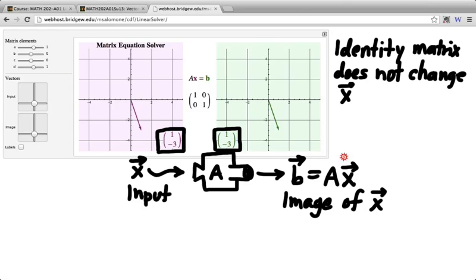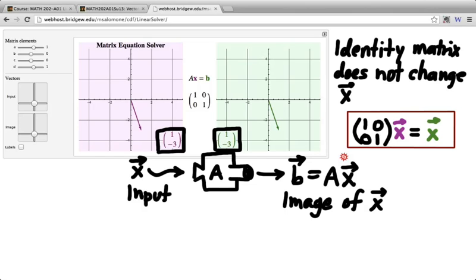In other words, if I take an identity matrix and I multiply it by any vector at all, the result is equal to that same vector. Is that clear? That if x is 1, negative 3, then the product of that matrix by 1, negative 3 is again 1, negative 3.